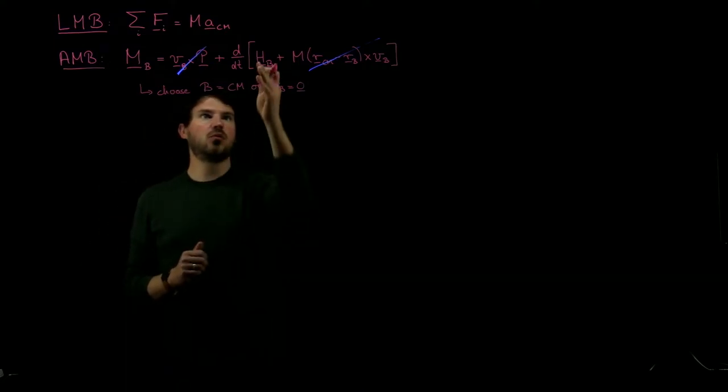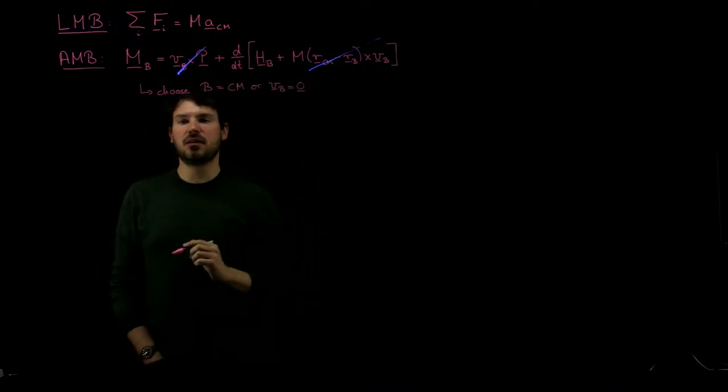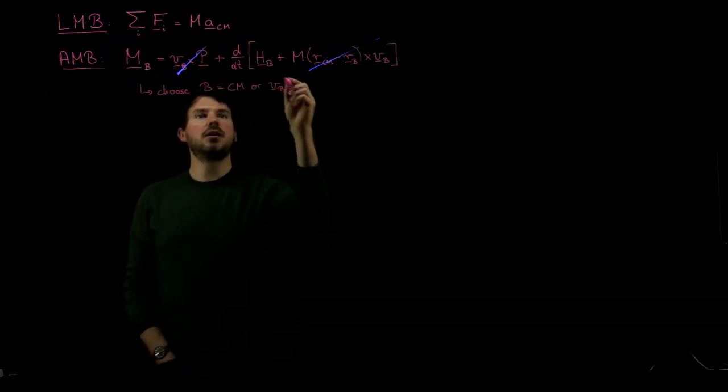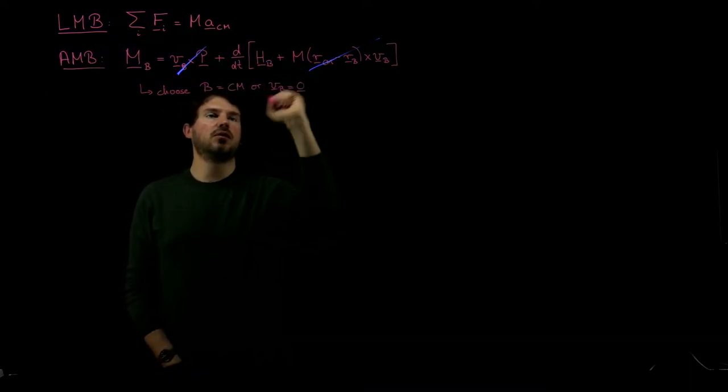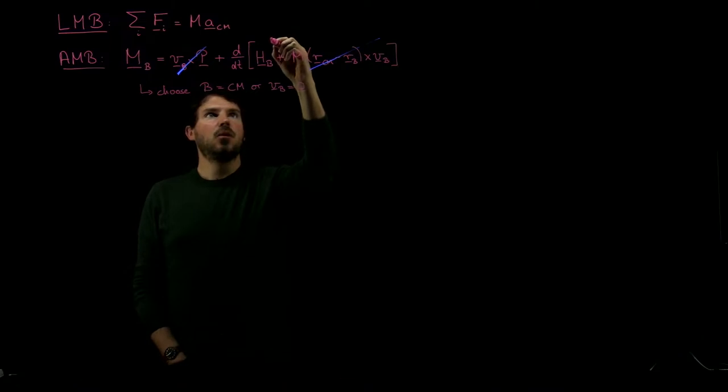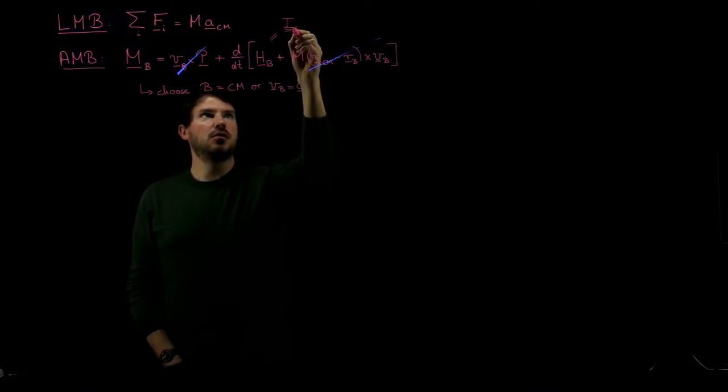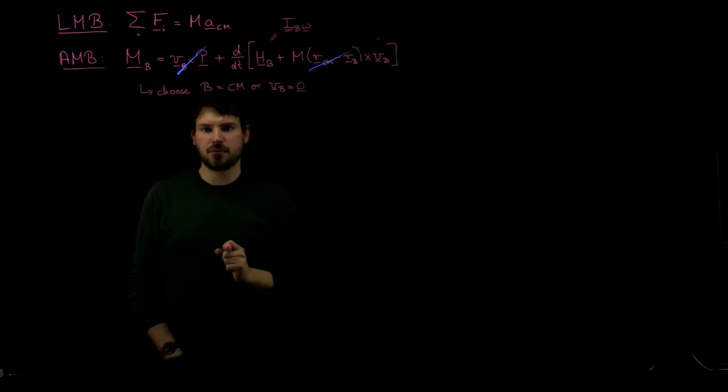We're only left with this over here. Then we have to find out what this HB, this angular momentum is. We showed that if point B is one of these points that we fixed here, we can always write this for a point on the body as moment of inertia tensor IB times omega. That simplifies a lot.